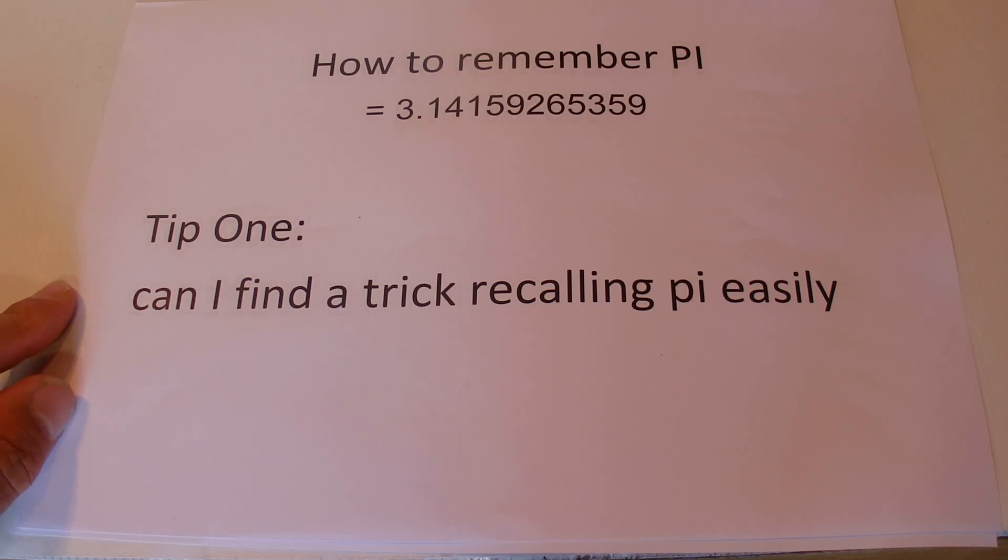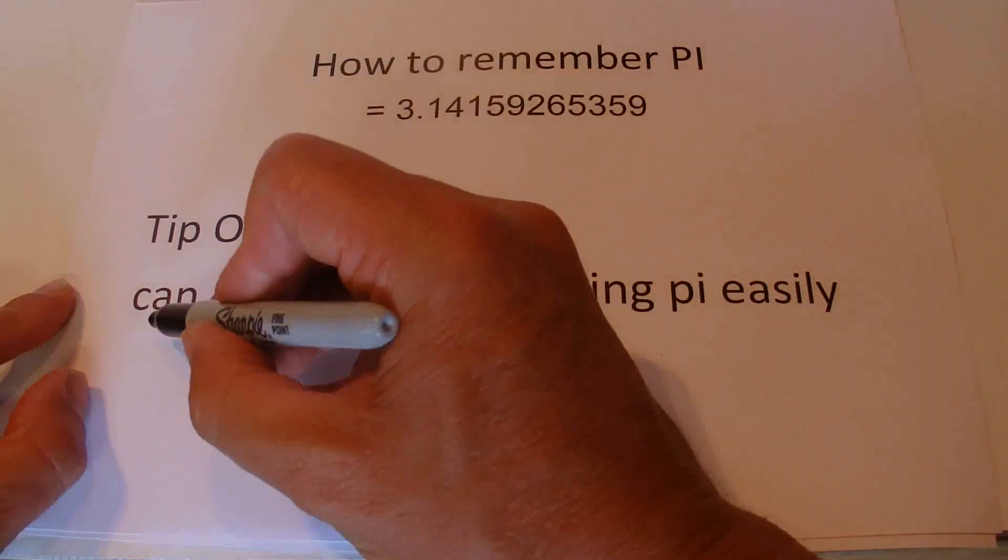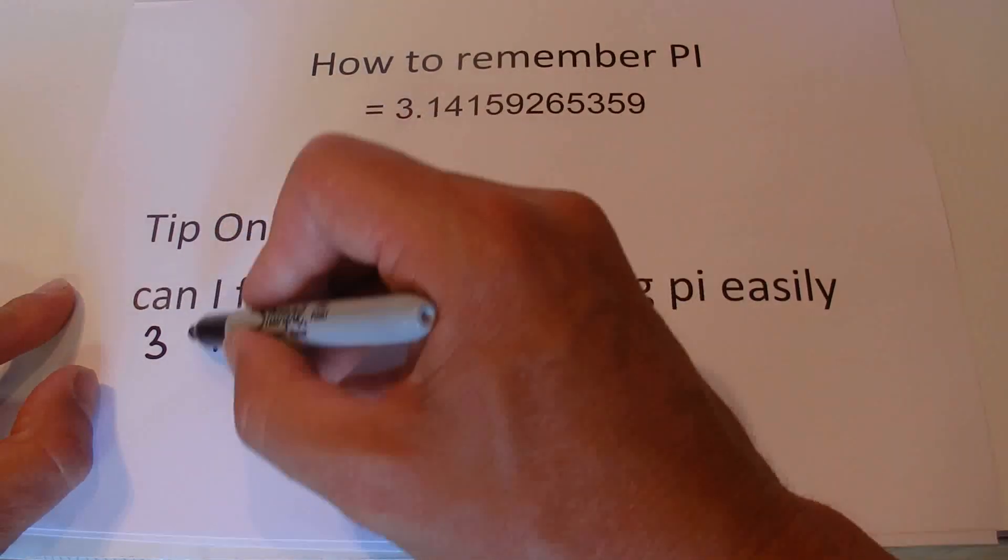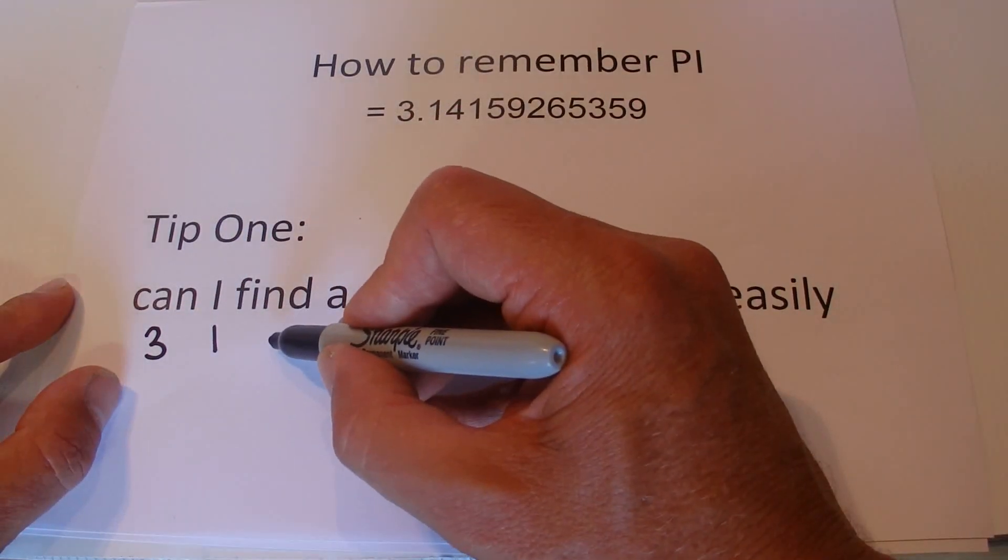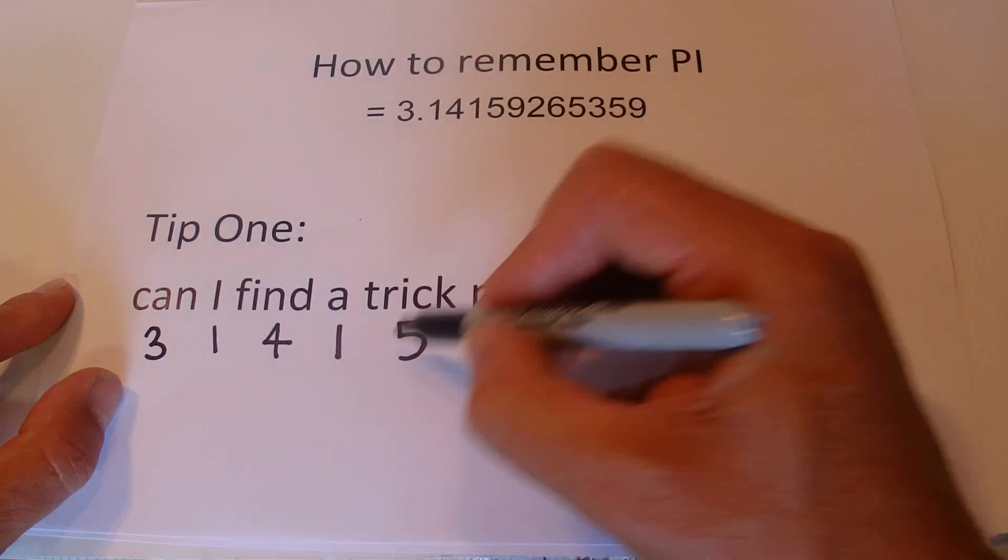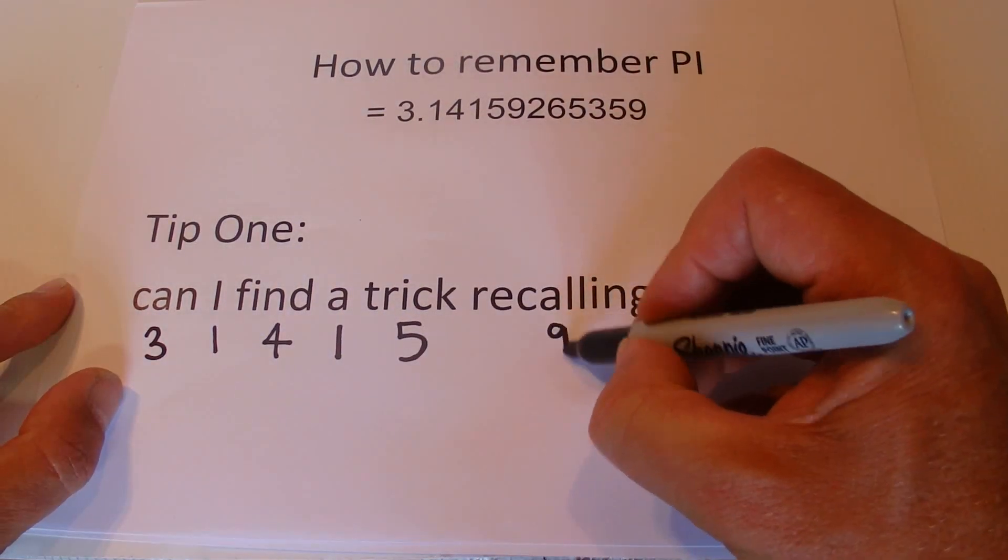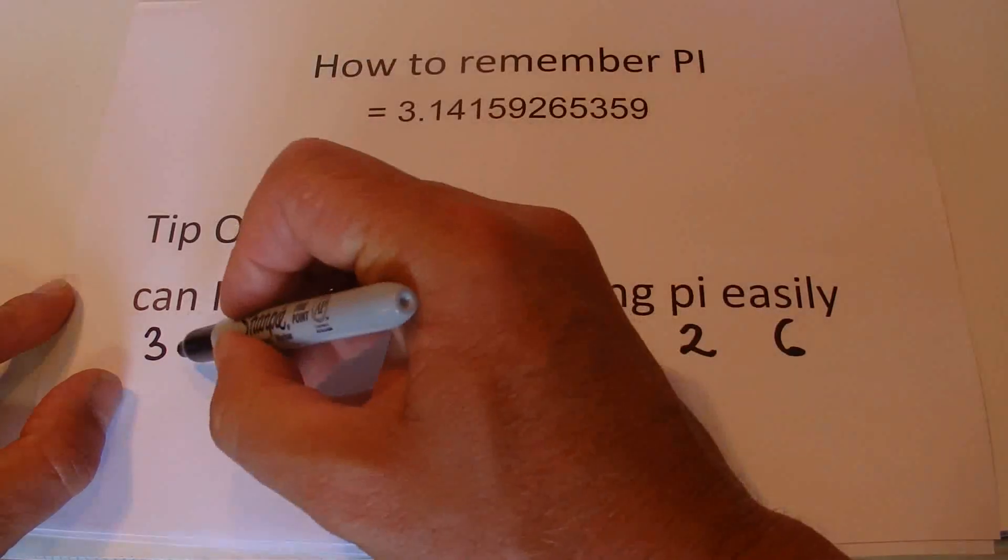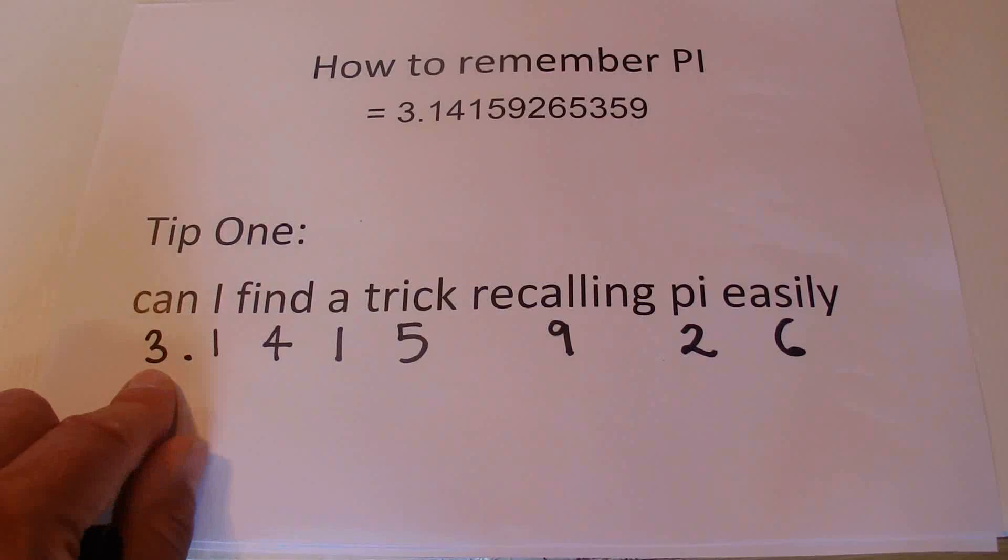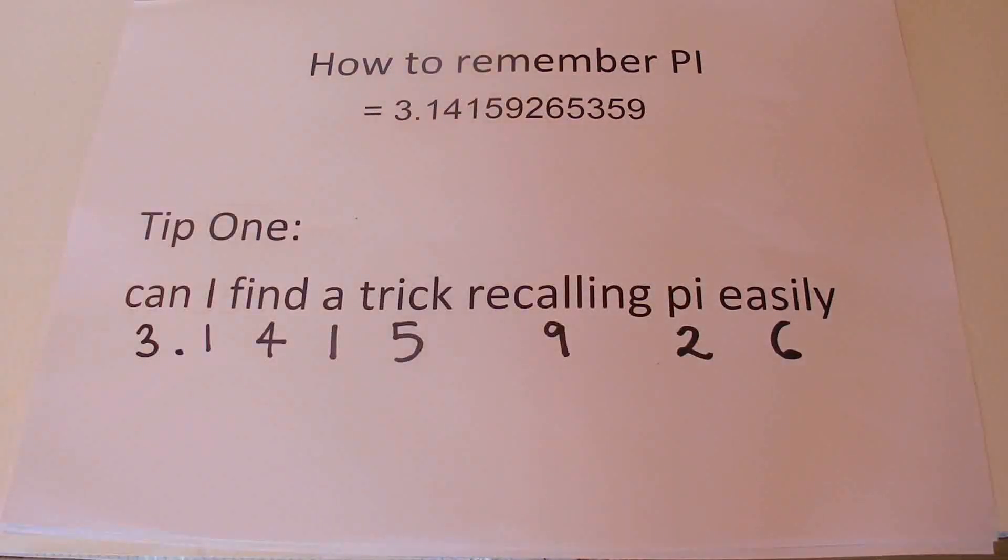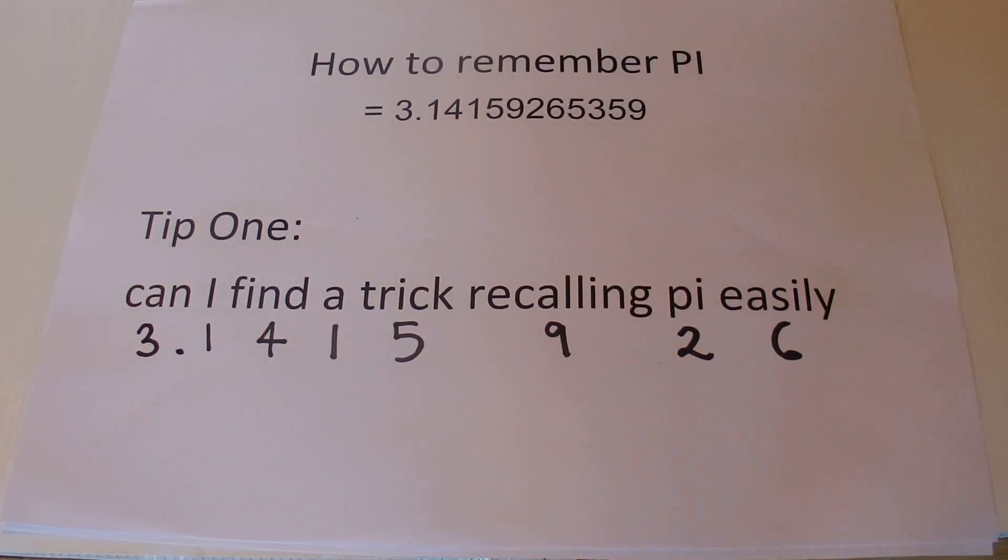All you need to do once you've remembered that little saying is write down the number of letters in each word. So 'can' has three, 'I' has one, 'find' has four, 'a' is one, 'trick' is five, 'recalling' is nine, 'pi' is two, and 'easily' is six. Put a point there and you've got 3.141592 6. There you go, you've got pi remembered accurately to seven decimal places.